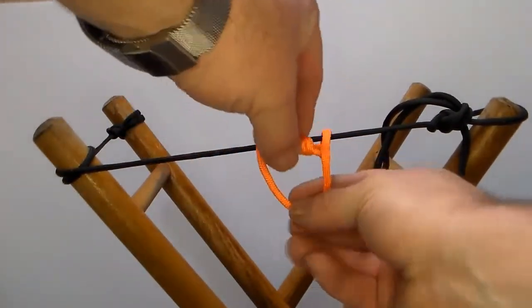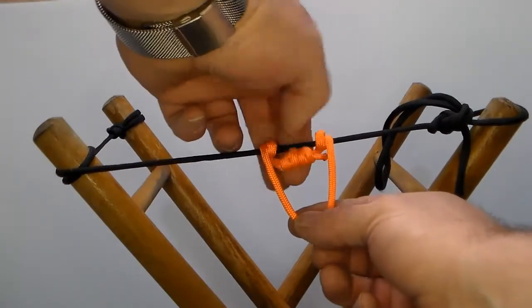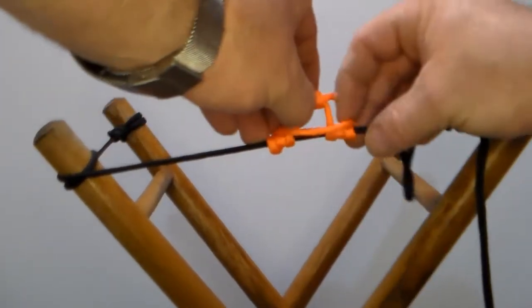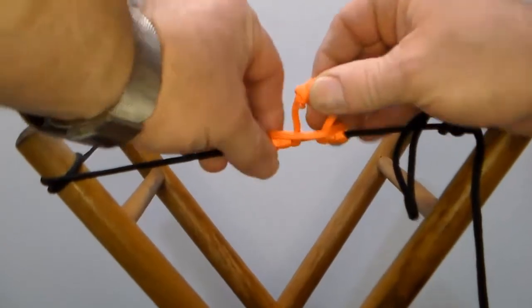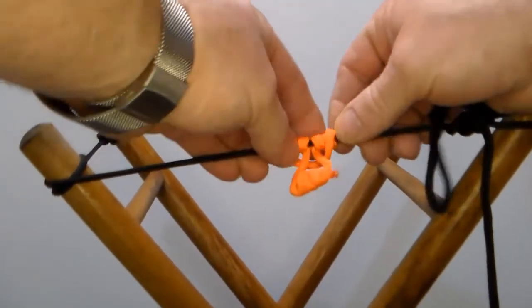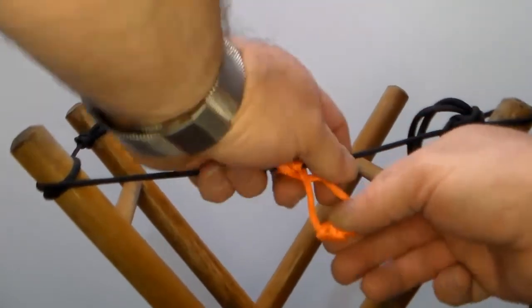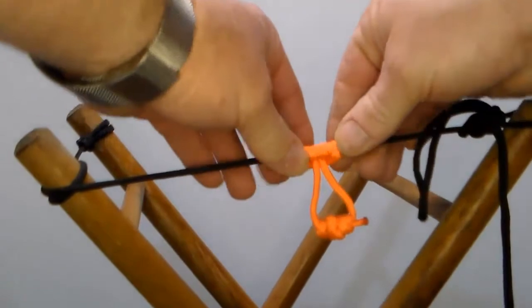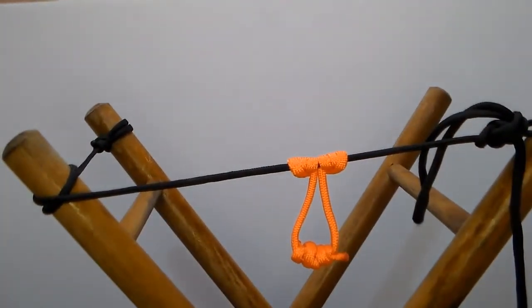Basically we just go around, feed the knot through just like that, two, three times. Okay, and we just go ahead and we dress this up, get this good and tight. Now this is a pretty small prusik loop, but it gives you an idea.